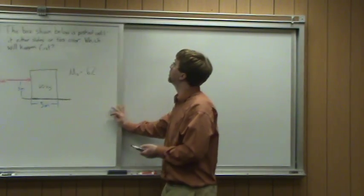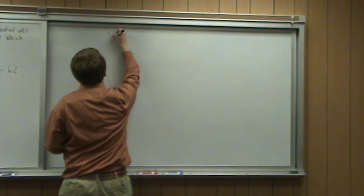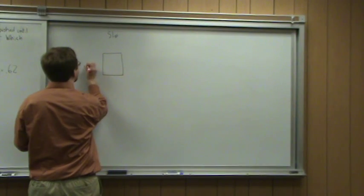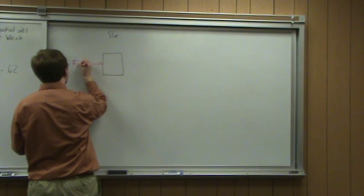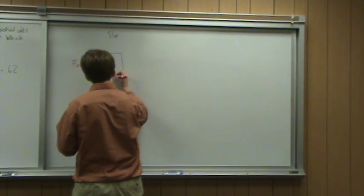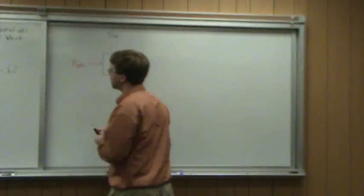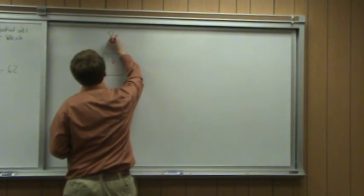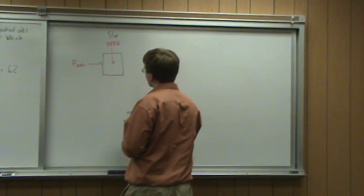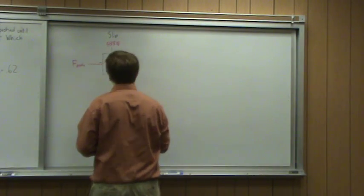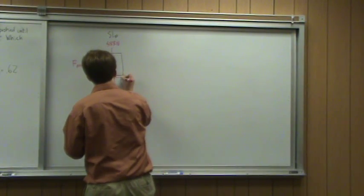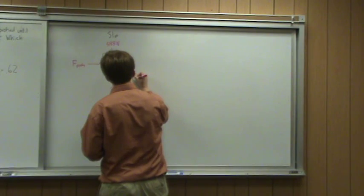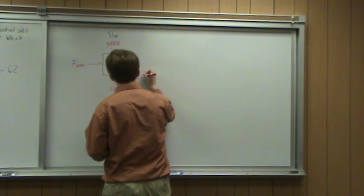I'm going to draw a free body diagram for each of these. Starting with the slipping case — where it starts to slide first. I've got my box, my pushing force, and my weight force. For a 60 kilogram box, the weight is 60 kilograms times 9.8, which is 588 newtons. The normal force is equal and opposite to that, so also 588 newtons. The friction force FF, if it's just about to slide, is equal to mu static times the normal force of 588.